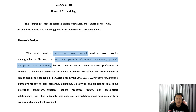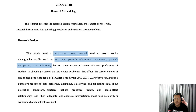On the research design, the study used a descriptive survey method, and it is used to assess sociodemographic profiles such as sex, age, parents' educational attainment, parents' occupation, the size of the income, and the top three expressed career choices, the preference of the students in choosing a career, and anticipated problems that affect the career choices of senior high school students of SPC and HS school year 2010-2011. Sex and age are examples of variables, as explained last Saturday.